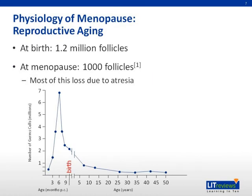How does menopause occur? The current theory is that menopause results from loss of ovarian follicular activity — in other words, reproductive ageing. Women are born with 1.2 million follicles, decreasing to 1,000 follicles by menopause. Most of this loss is due to atresia, not ovulation. Atresia accelerates at around age 35 to 38.